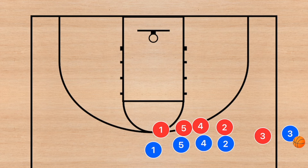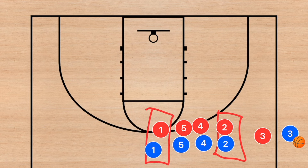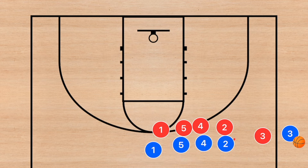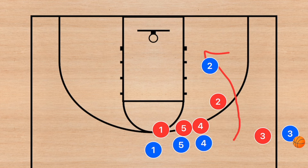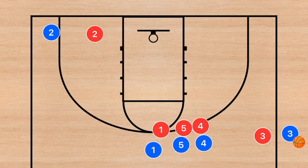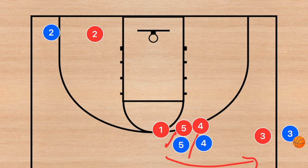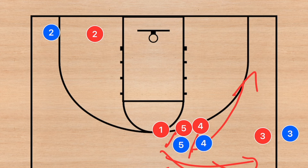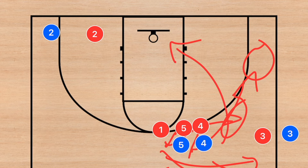Against man-to-man, here is a sideline inbounds play that can also be run on the baseline. We want our fastest player up front and our point guard at the back. The fastest player is going to try to get to the rim as fast as possible — if he beats his man, we hit him for a layup; if not, he clears out to the opposite side. At the same time, players five and four set a screen for player one to receive the ball. He gets away from the ball and sets up the offense. If nobody gets the ball, player four rolls to the sideline and player five comes to the ball — three options total.